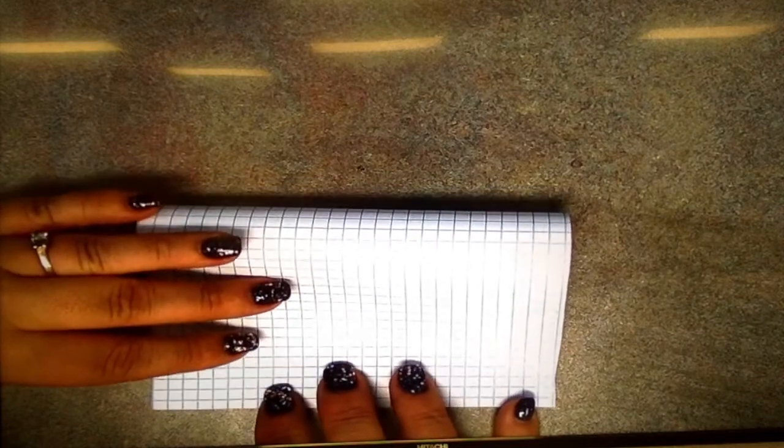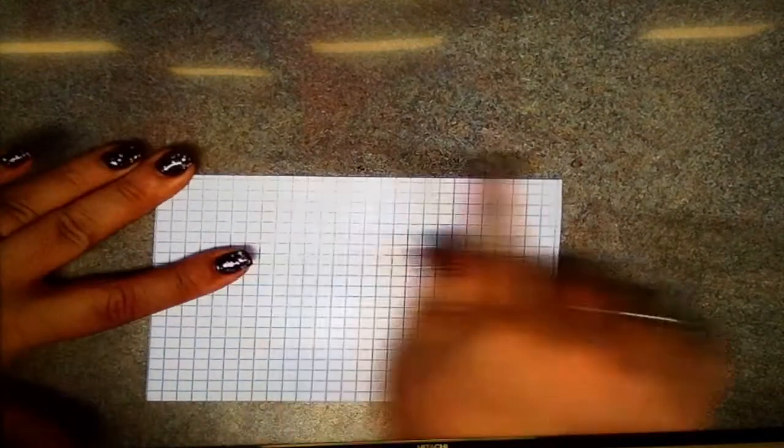So first you need a half sheet of grid paper, and you're going to fold it in half, just like that.